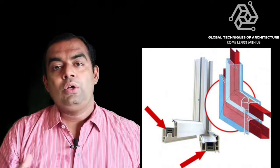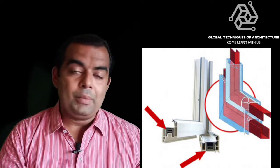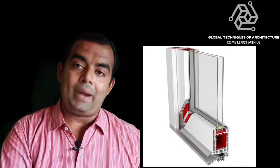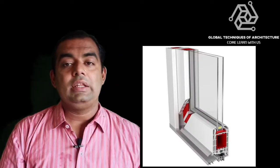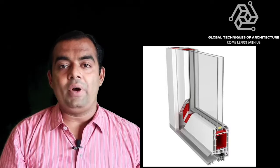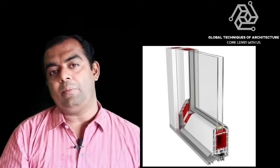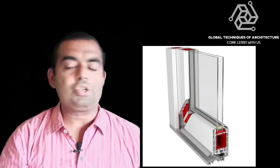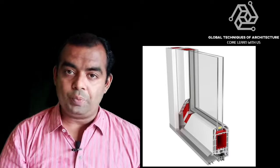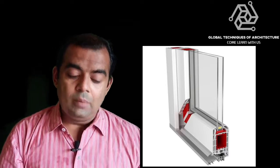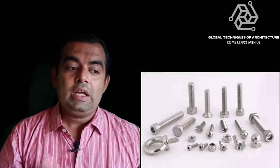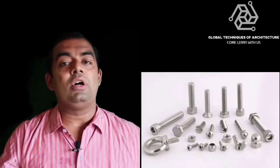If we require inserts for strengthening the system, those are called MS inserts. They can come in two forms: brackets or actual inserts. For uPVC profiles, 99% of the time when the vertical height crosses two meters, we have to go for GI reinforcement.